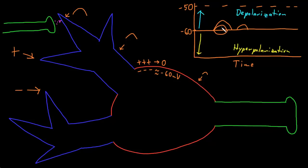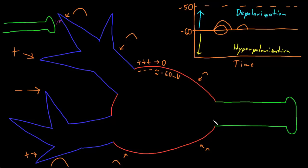Similar to temporal summation is the concept of spatial summation. If two graded potentials happen far enough away from each other, they may have no effect on each other — both may decay entirely by the time they reach the trigger zone. But if two excitatory inputs occur very close to each other on the membrane, those two depolarizations could have spatial summation — they could add together in space so that you get a depolarization twice the size.